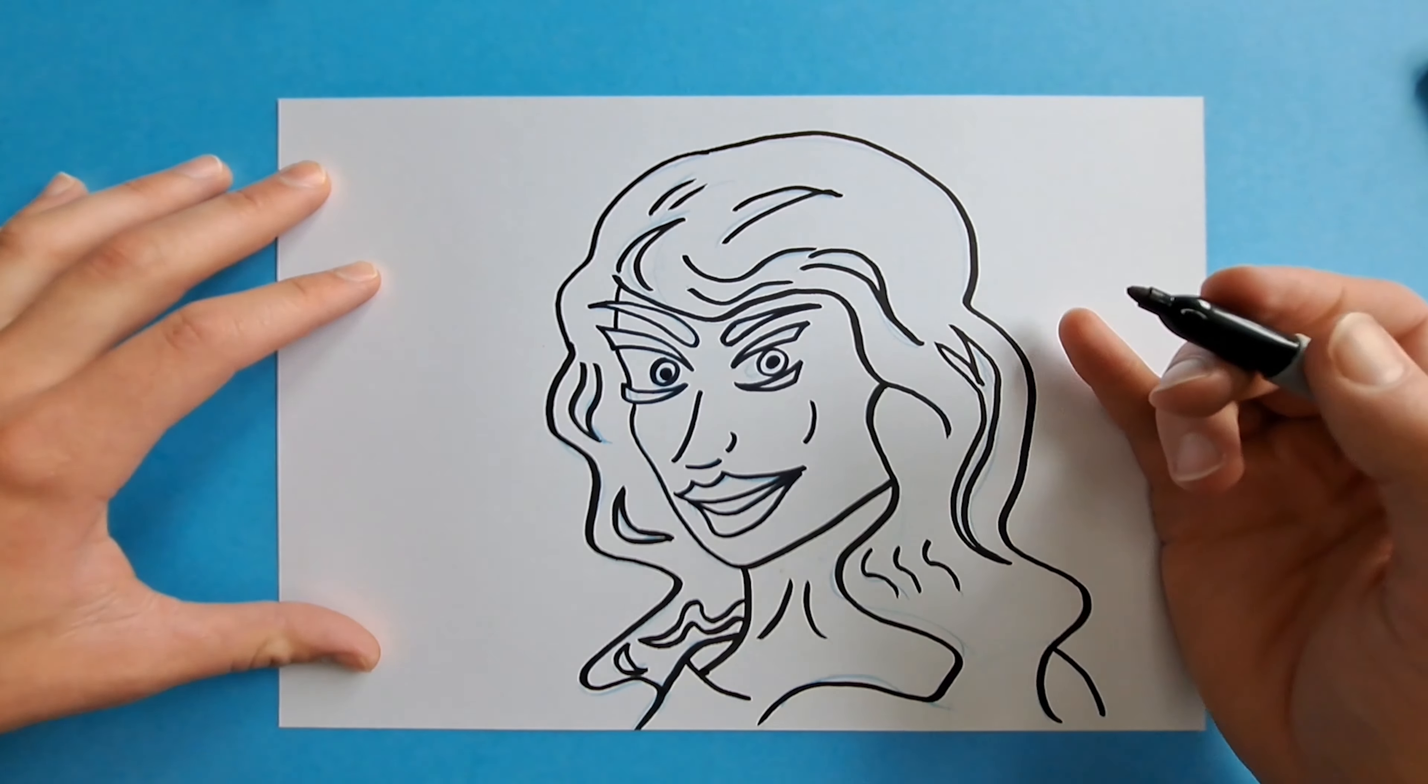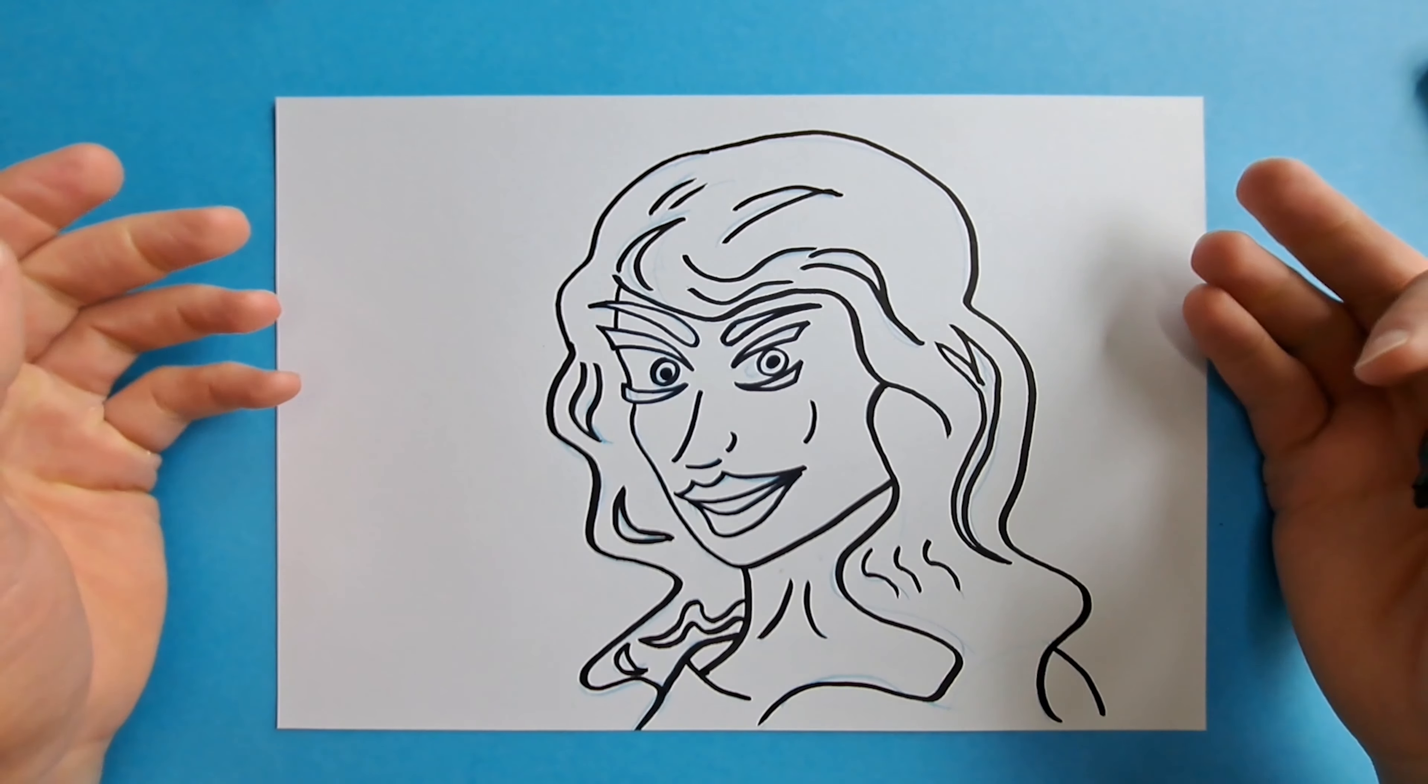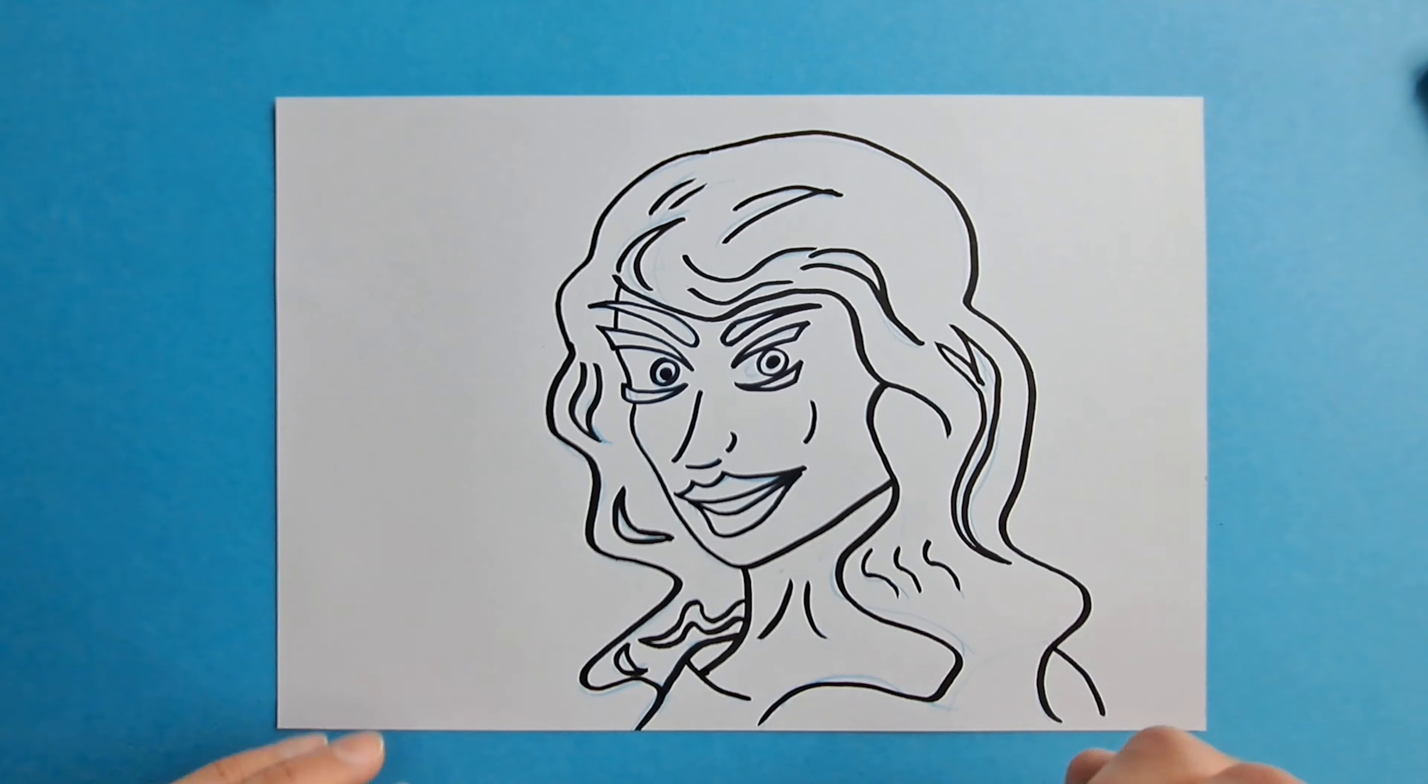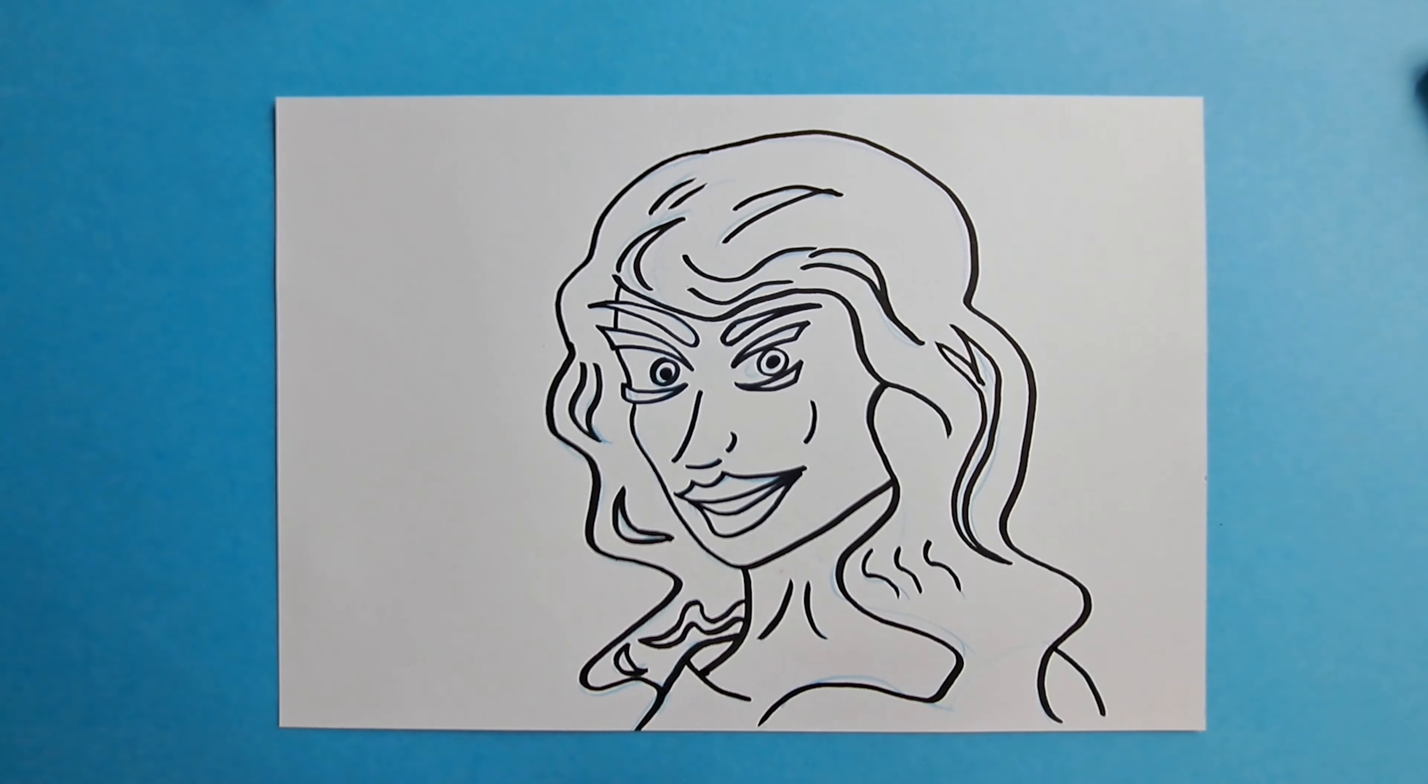So that's how you draw Taylor Swift. Now I'm going to add the final touches to her and add some colors. Please tell me down in the comments below which character I should do next, and please like and subscribe for more. Thank you all for watching.